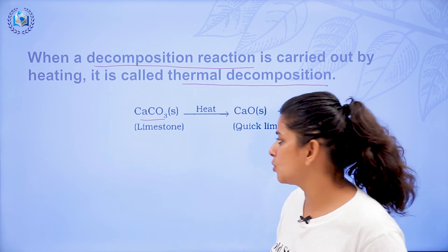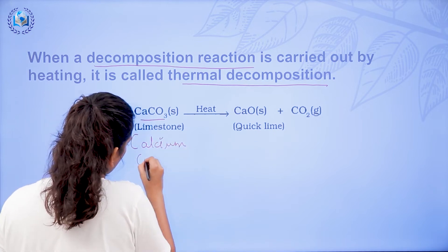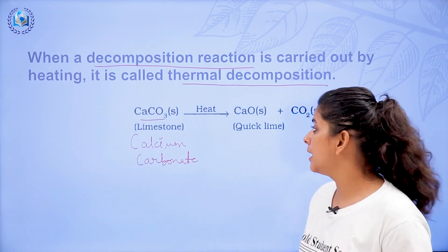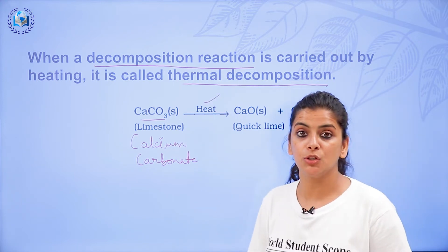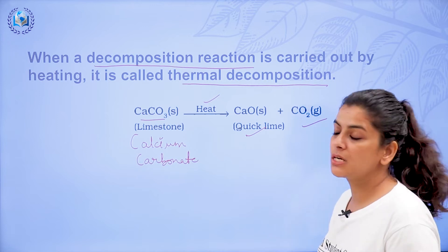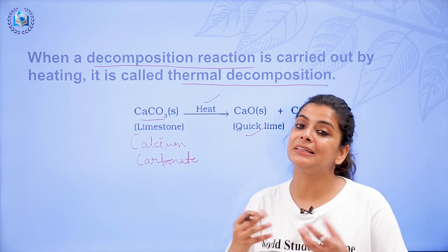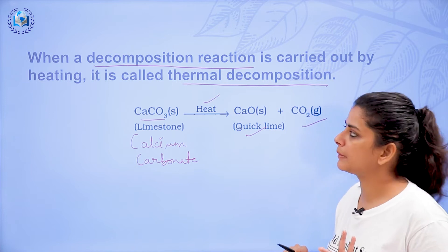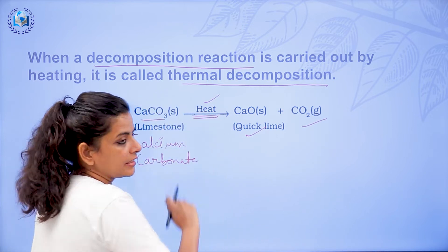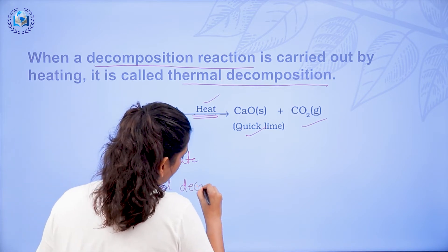CaCO3, calcium carbonate, is limestone. When you give heat to limestone, it decomposes into quicklime — CaO — and carbon dioxide is released. So a single reactant is giving two products; limestone is being decomposed into quicklime and carbon dioxide. That is a decomposition reaction, and since it requires heat, this type of reaction is known as a thermal decomposition reaction.